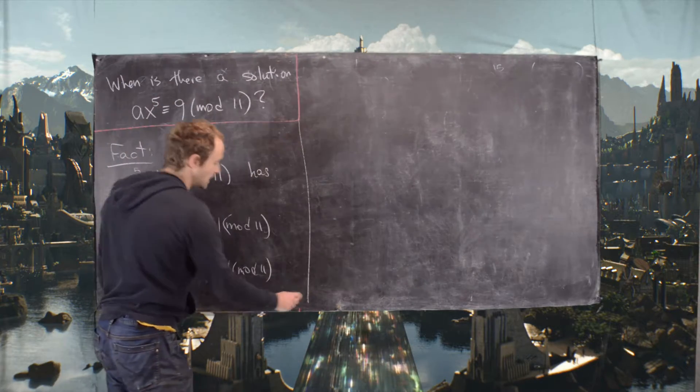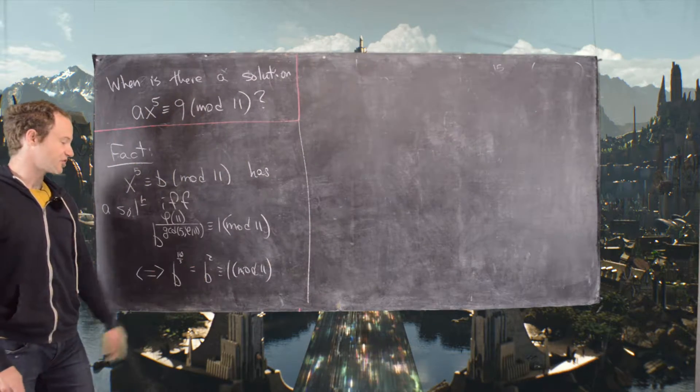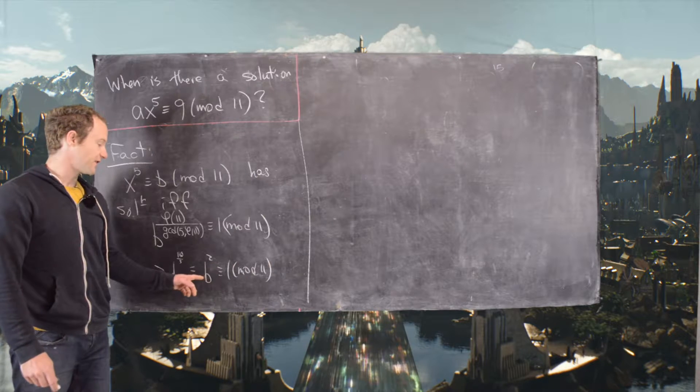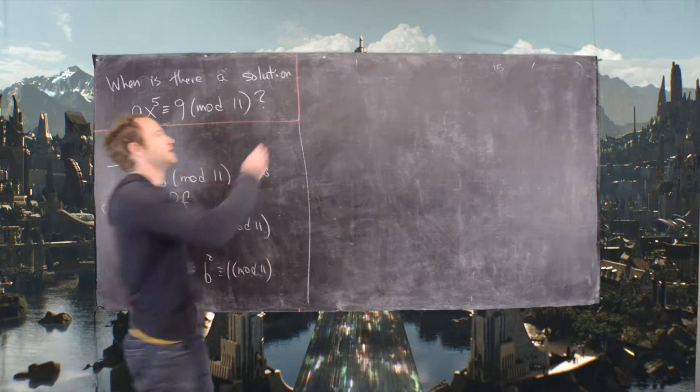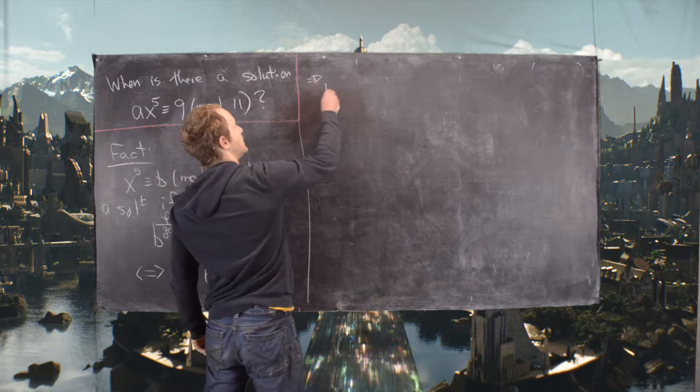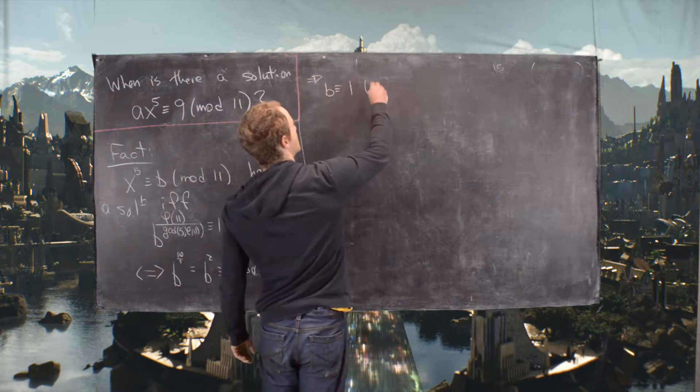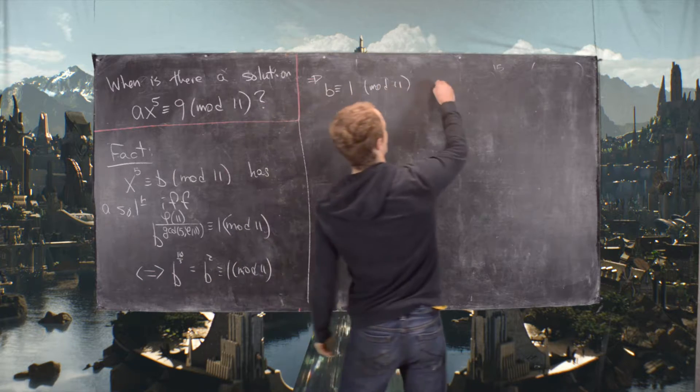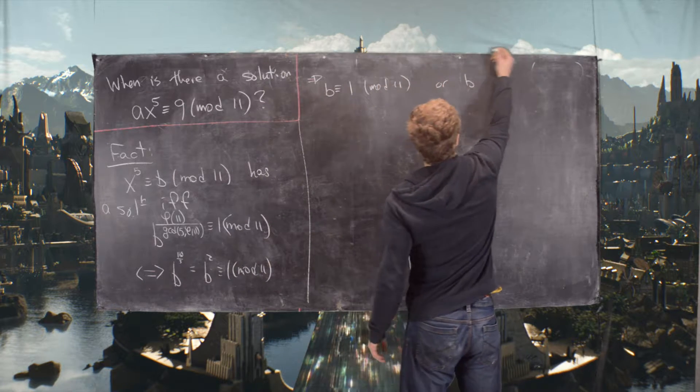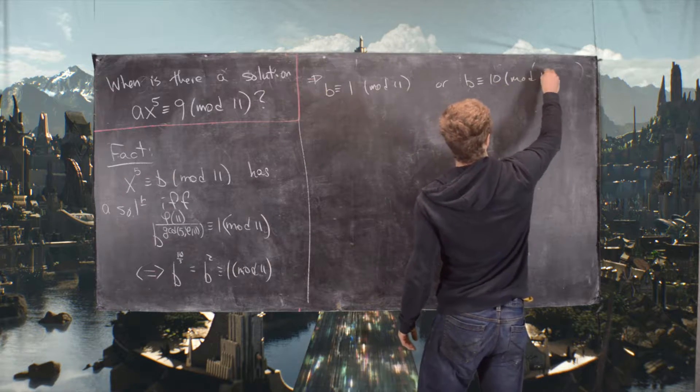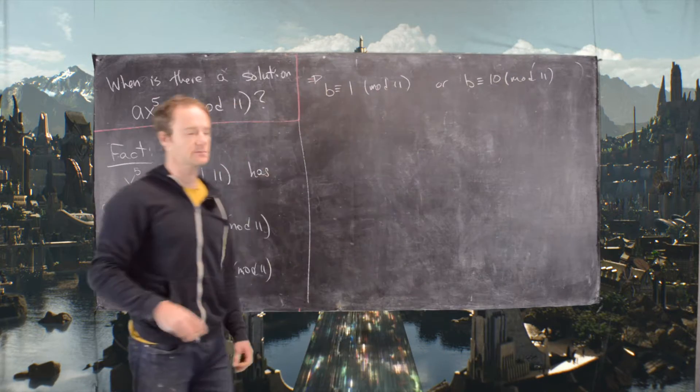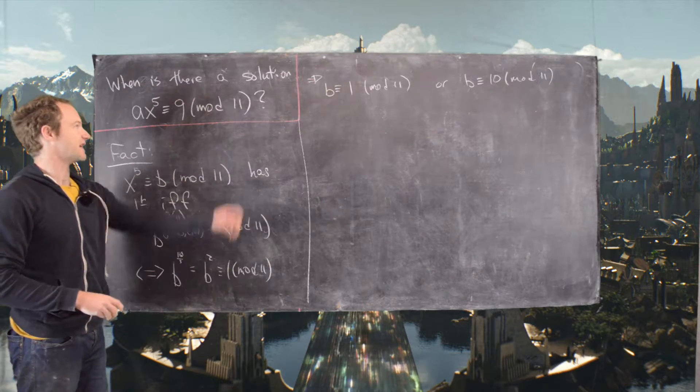In a previous video, we checked that the only things that are their own inverses... notice this is the same thing as saying that B is its own inverse. So that tells us that B ≡ 1 (mod 11) or B ≡ -1, which is 10 (mod 11). Those are the only two possibilities in this case.